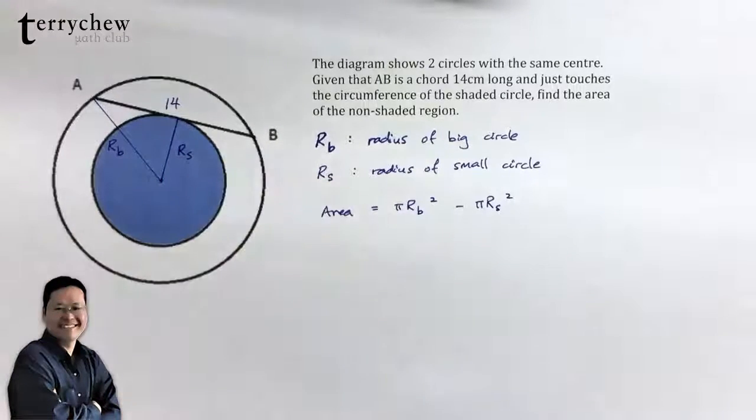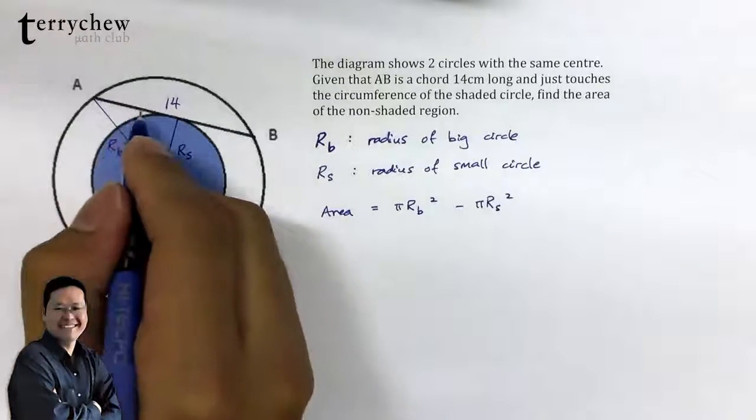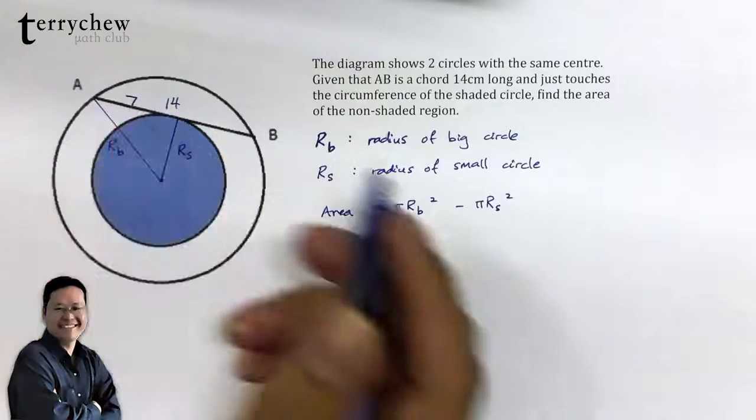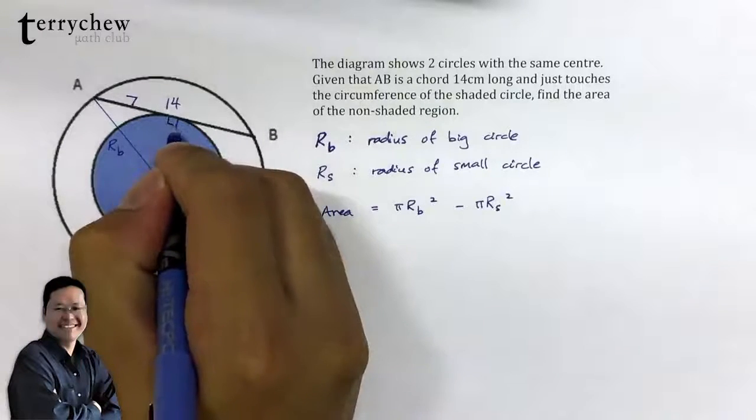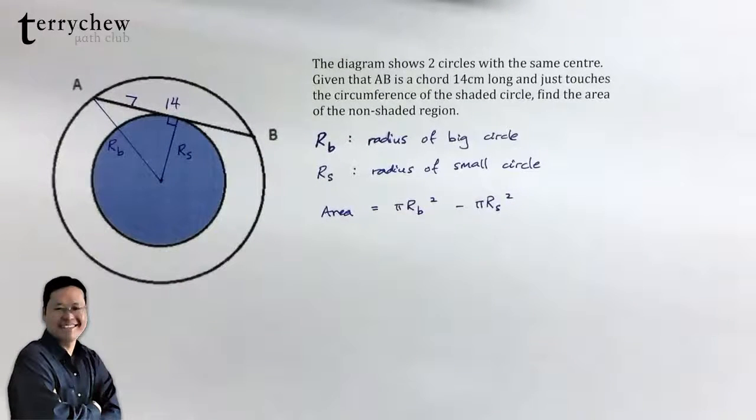So observe that we have a triangle here. What else do we know about this triangle? This side has length 14 divided by 2, which is 7 obviously. Moreover, this angle is 90 degrees because this chord is tangent to the circle.